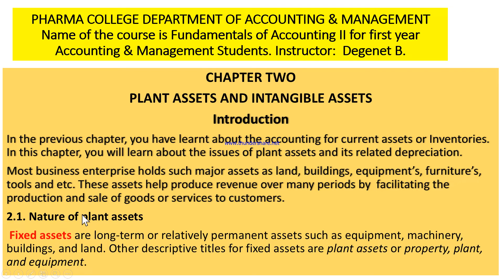When we come to the nature of plant assets, those plant assets are sometimes known as fixed assets. Fixed assets are long-term or relatively permanent assets such as equipment, machinery, buildings, and land. Other descriptive titles for fixed assets are plant assets or property, plant, and equipment. They are totally known as fixed assets or plant assets.